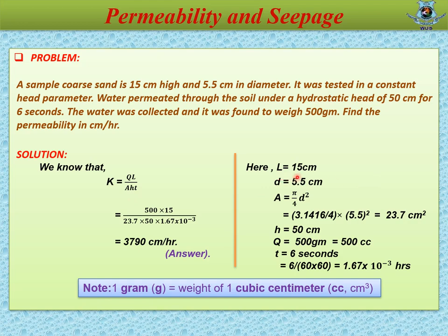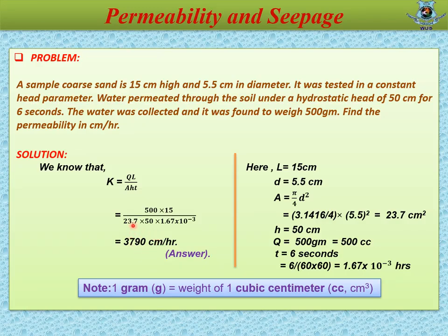From the question: L = 15 cm, D = 5.5 cm. Cross-sectional area A = (π/4)D² = (π/4)(5.5)² = 23.7 cm². H = 50 cm. Q = 500 g = 500 cm³ (since 1 gram = 1 cm³ for water). Time T = 6 seconds = 1.67 × 10⁻³ hours. Replacing all these values in the equation K = QL/(AHT), we get K = 3790 cm per hour.